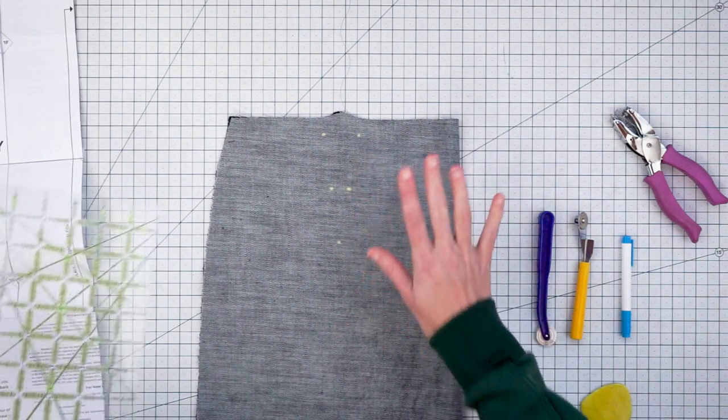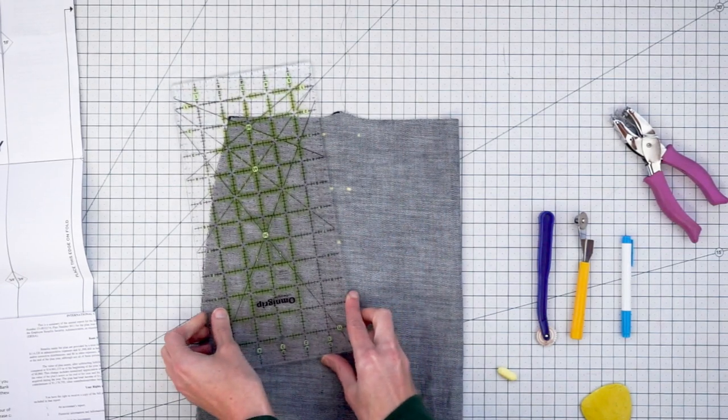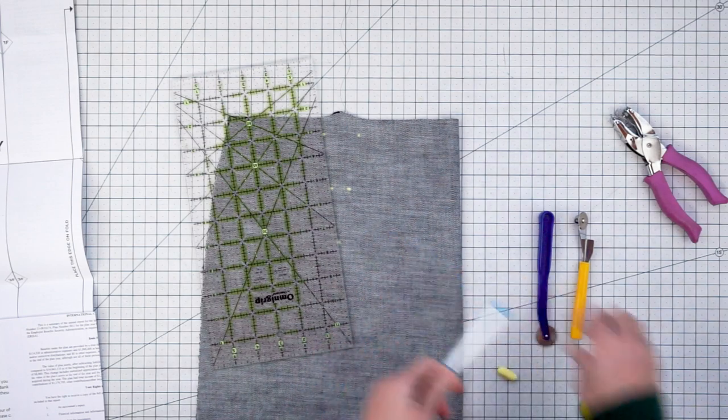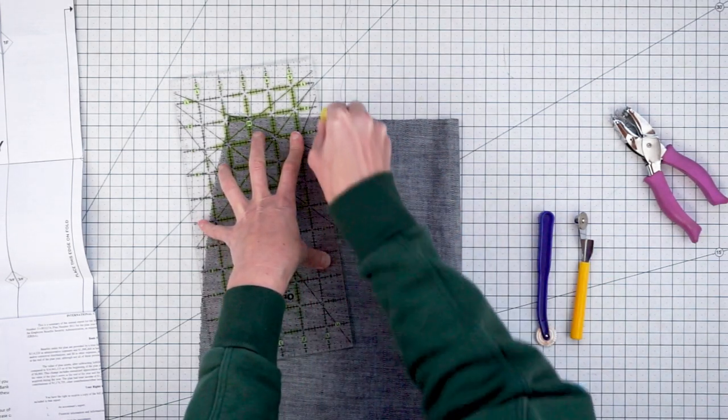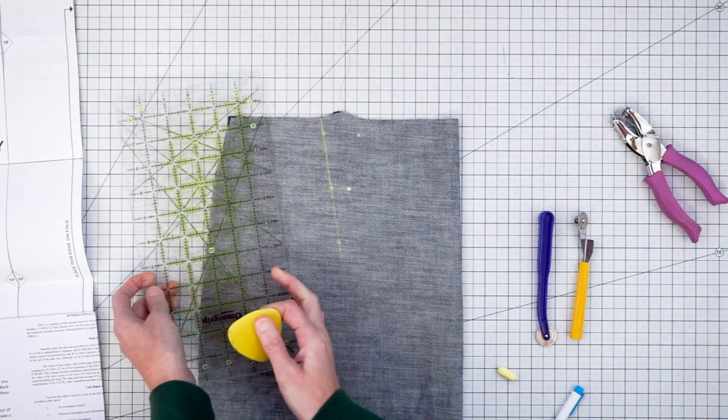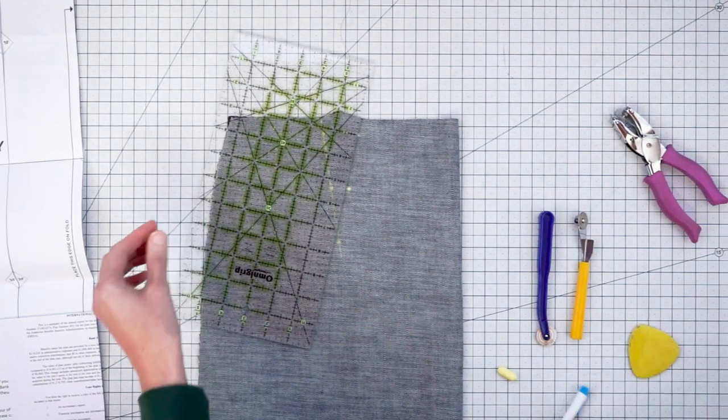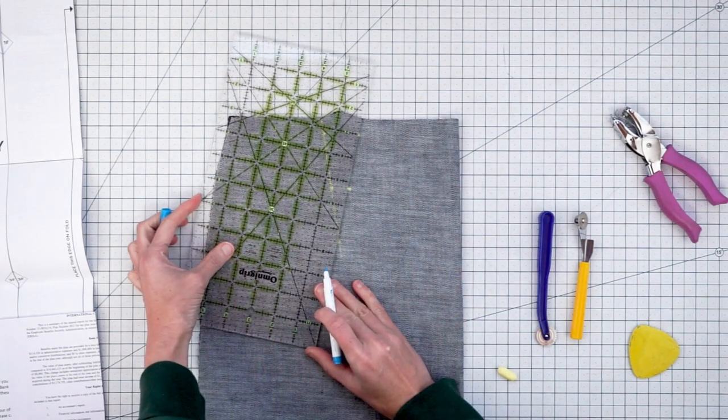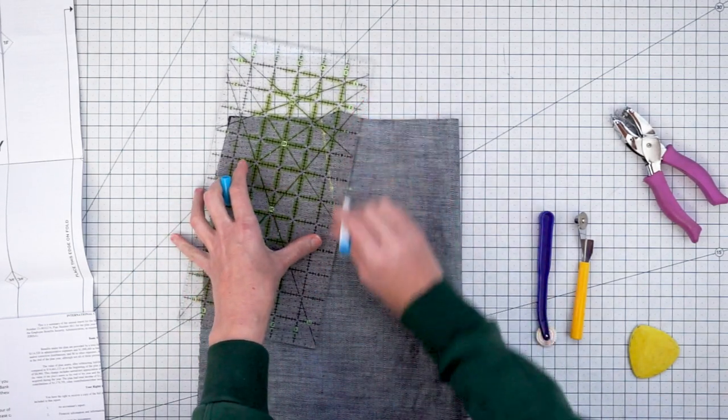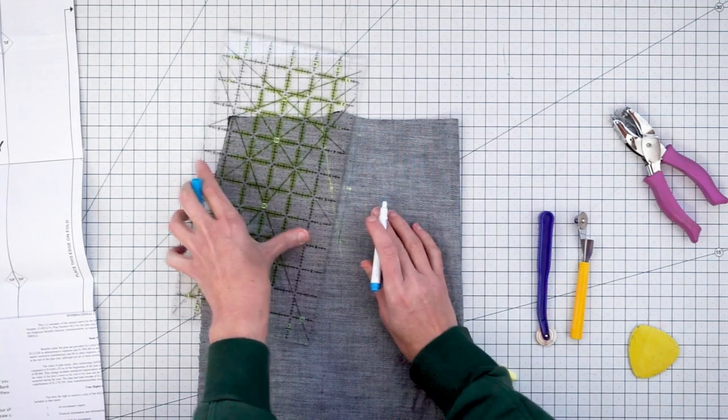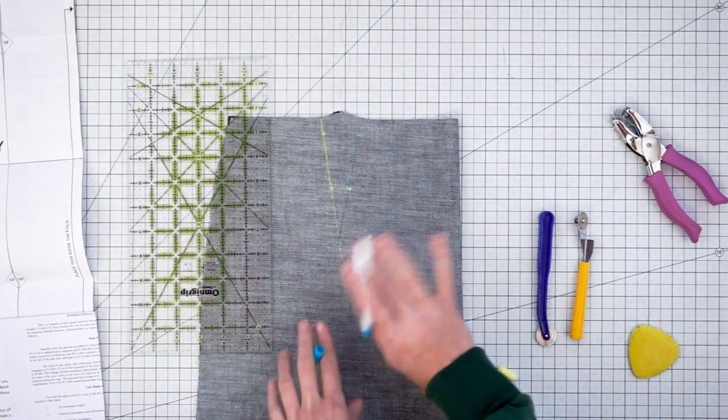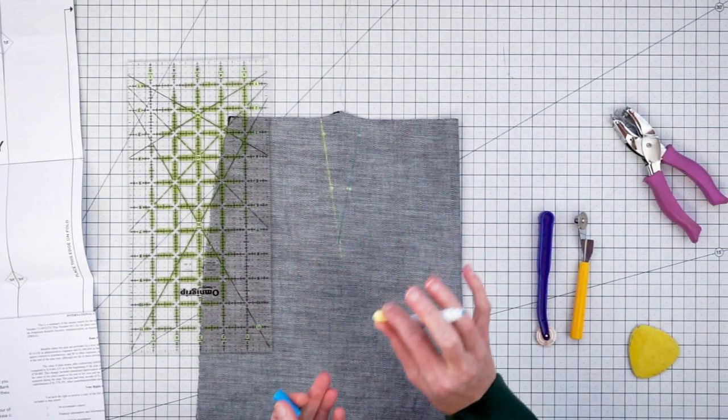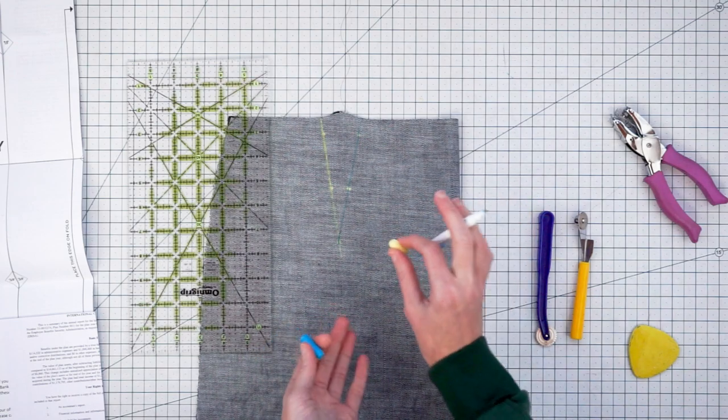I just use the dots as my guideline, but if you want a little more guidance, you can draw in the lines between the dots and you could do that using chalk or you could use a removable marking pen. You'll just want to make sure that whatever you use, you'll be able to see it on your fabric and you want to make sure that it'll wash away later. One of the reasons I really like chalk like this is because it's very easy to remove from really any kind of fabric.